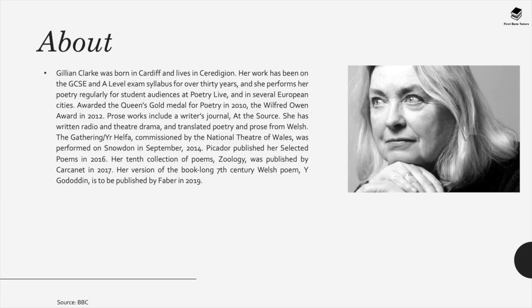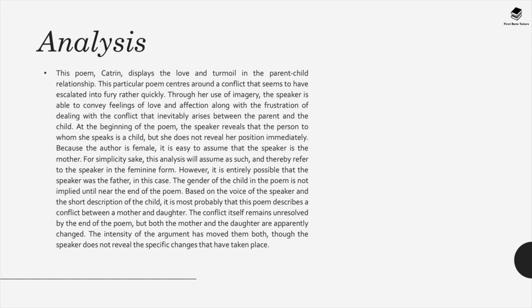The next poem is Catherine by Gillian Clarke. Clarke is a contemporary poet born in Cardiff who lives in Ceredigion; her work has been on the GCSE syllabus and published by Faber. Catherine displays the love and turmoil in the parent-child relationship, centring around a conflict that escalates quickly. Through imagery, the speaker conveys love and affection alongside frustration. The speaker addresses a child, and because the author is female, it's easy to assume the speaker is a mother — most probably a mother-daughter conflict.